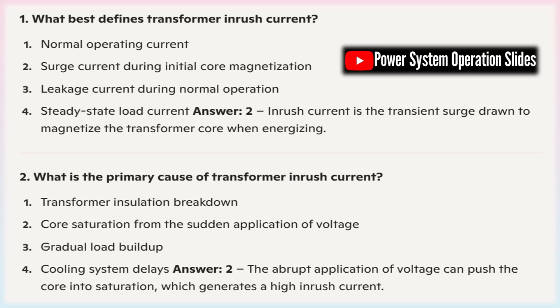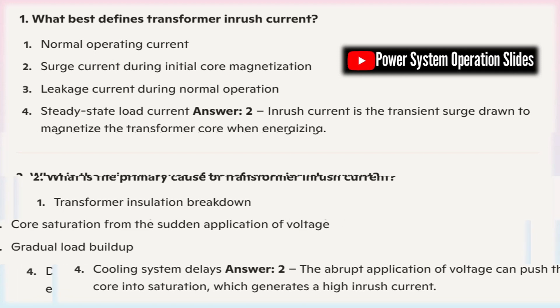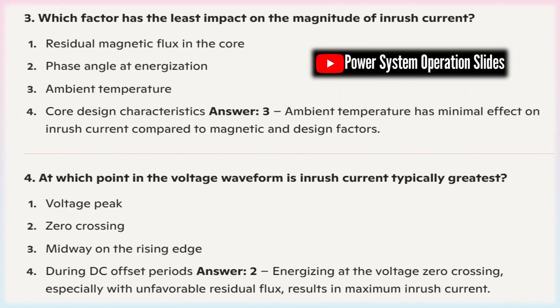In practice, inrush current is typically estimated using transient analysis models or simulation software that integrate these factors into differential equations representing the magnetic and electrical dynamics. These tools help engineers predict the maximum inrush current, ensuring that the system is equipped with appropriate protective devices and coordination measures for safe operation.